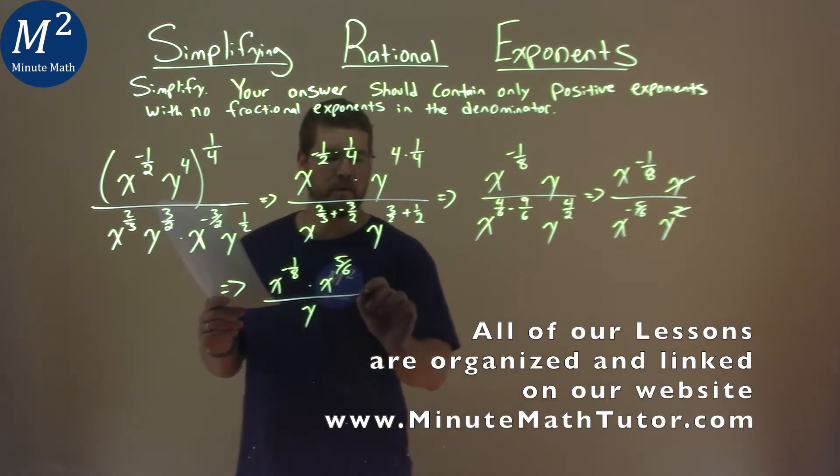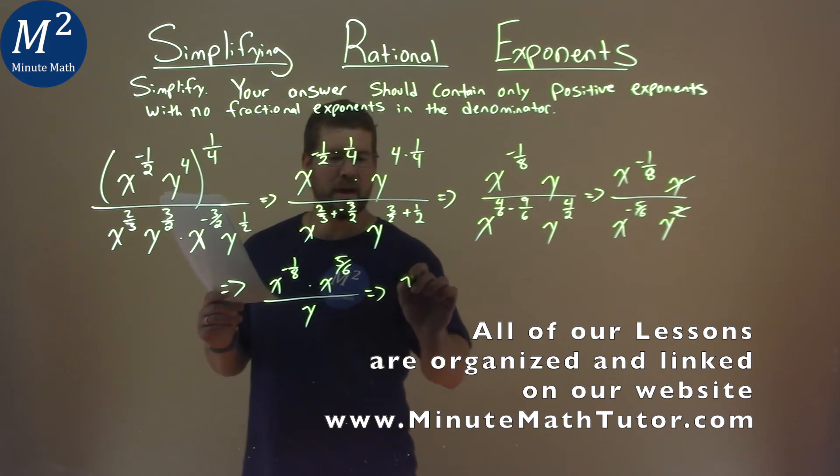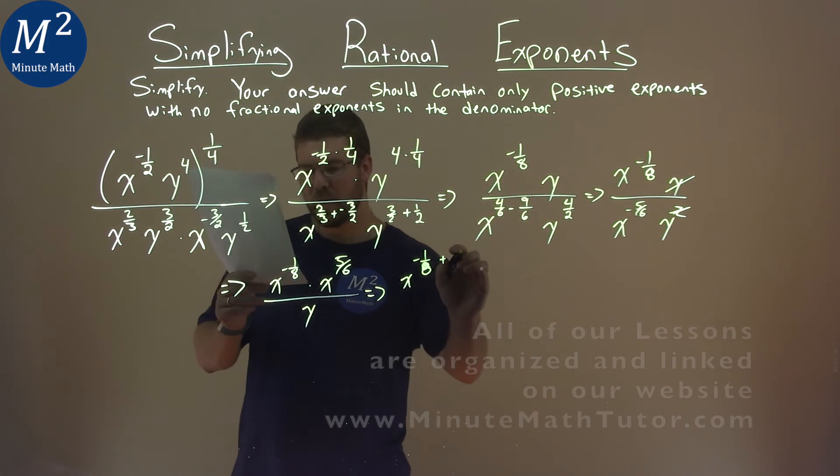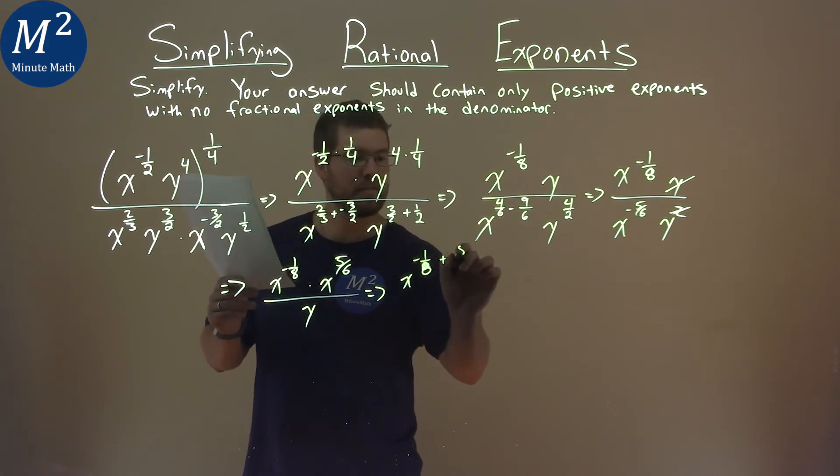From there we know we have to add our exponents. So we have x to the negative one-eighth plus five-sixth as an exponent over y.